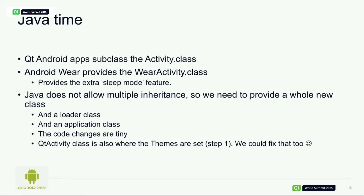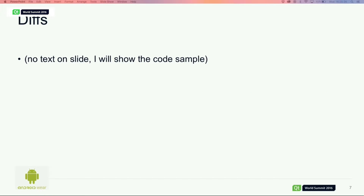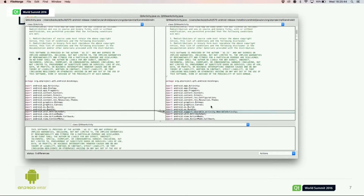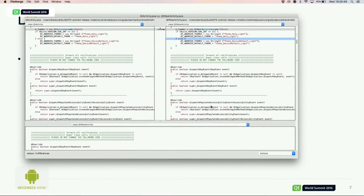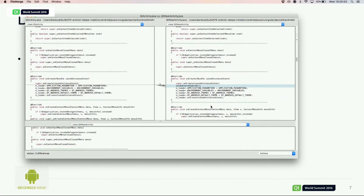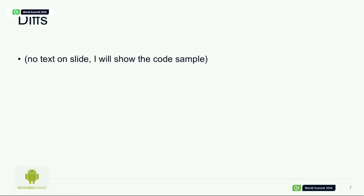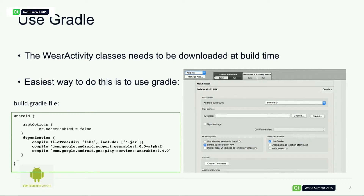To get that to build properly, in Qt Creator we need to use the Gradle build system. If you're familiar with Android, you'll know that Gradle is the Google way of building apps on Android — we switch that on in Qt Creator with a little checkbox. We also add the relevant classes we need to download to the build.gradle file, where we're calling the WearActivity classes and downloading them. The great news is that compiles.